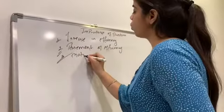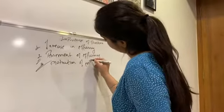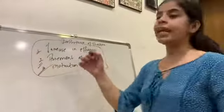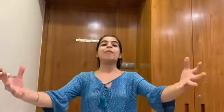So the first set of importance: increase in efficiency, assessment of efficiency, and motivation of employees. The fourth importance is effective planning. All functions of a business cannot be planned by one person alone. A planner can chalk out a plan by collecting necessary information from different employees. Through direction, interaction with all employees happens regularly, so planning becomes better. So the fourth point is effective planning.